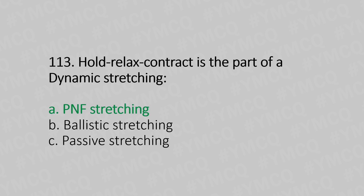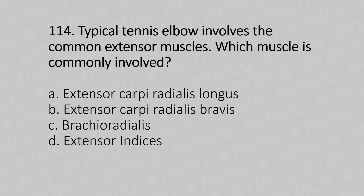Question number 114: Typical tennis elbow involves the common extensor muscles. Which muscle is commonly involved? Option A: extensor carpi radialis longus, Option B: extensor carpi radialis brevis, Option C: brachioradialis, Option D: extensor indicis. The answer is Option B, extensor carpi radialis brevis.